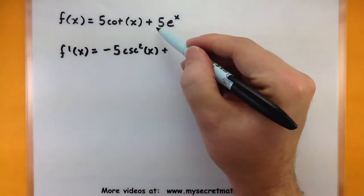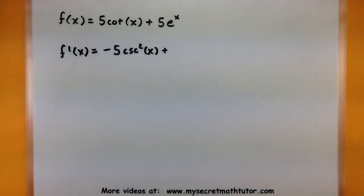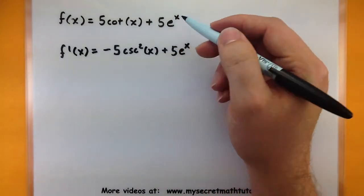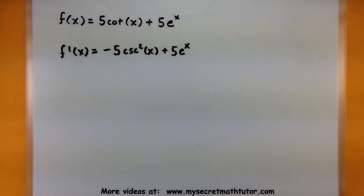Then we take the derivative of the next part just like we normally would. So five e to the x, since its derivative is the same as itself. And then that one's done.